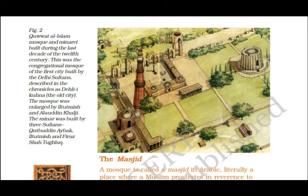The mosque Quwwat-ul-Islam and the minaret were built during the last decade of the 12th century. This is the first city built by the Delhi Sultans, described in the chronicles as 'Delhi Kuhna' (Old Delhi). The mosque was later enlarged by Iltutmish and Alauddin Khilji, and the minaret was built by two sultans — Qutbuddin Aibak and Iltutmish.